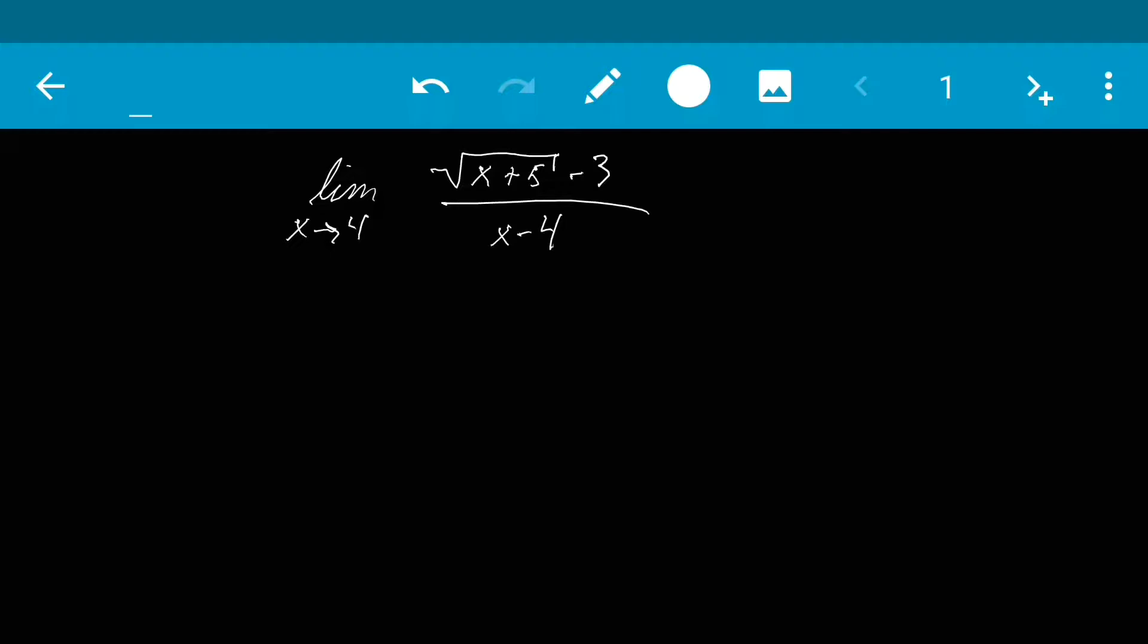The first thing you want to do when you have a limit problem is try and substitute this 4 in for x. Well if we did that we would find out that we get a 0 in the denominator which would end up making this undefined. So if this is undefined that means we need to reduce this down. That means this isn't in simplest form and we need to reduce it down.